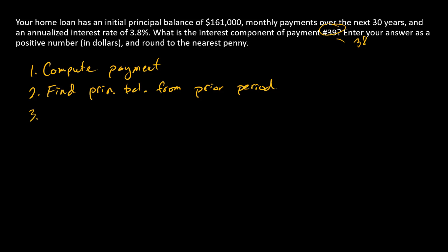The interest in a payment equals the prior principal balance, and we're going to multiply that by the periodic interest rate.